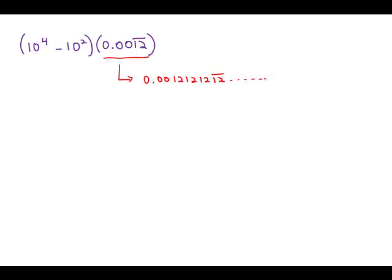Now let me point out a big mistake with this problem would be to figure out this subtraction first and then try to multiply that difference times this decimal. As it happens, this subtraction is not hard to figure out — it's 9900 — but then you're stuck trying to multiply 9900 times this infinite decimal. Huge mistake.